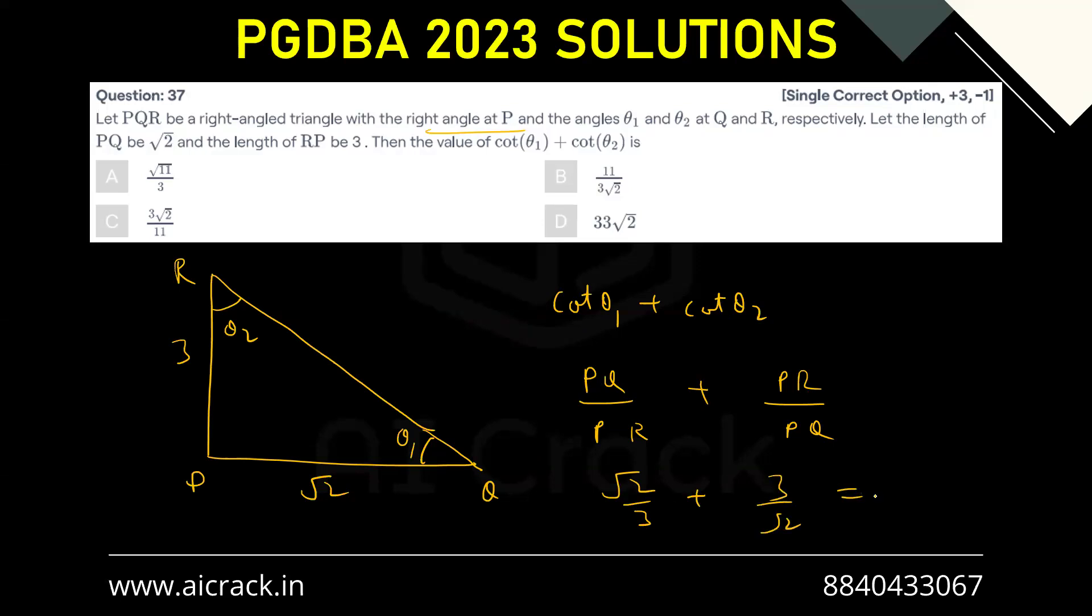If we take the LCM, this becomes (2 + 9)/(3√2), which is 11/(3√2). So V is the correct answer.